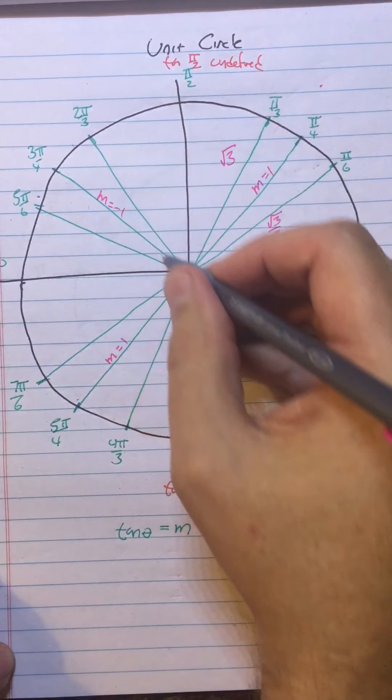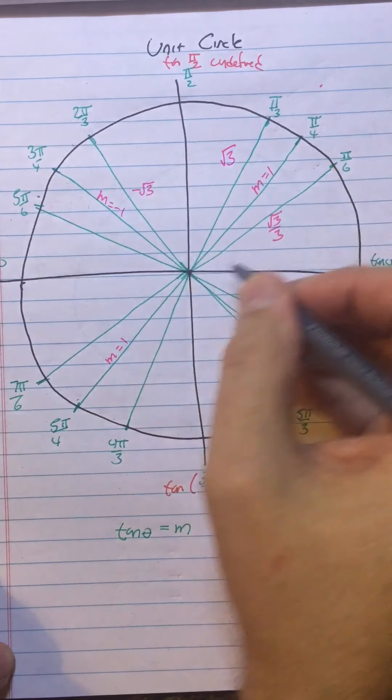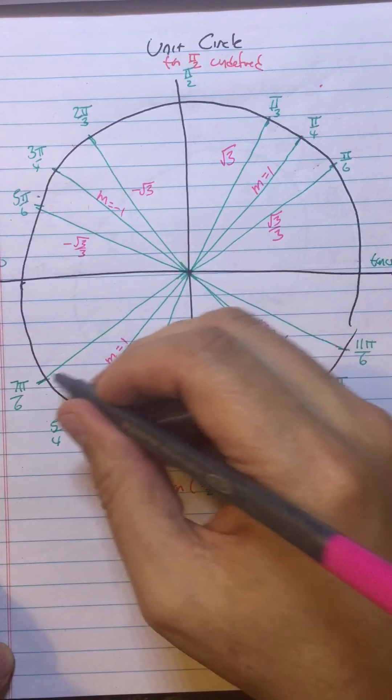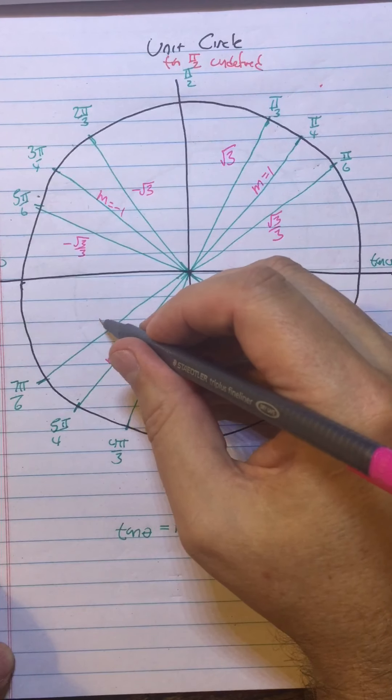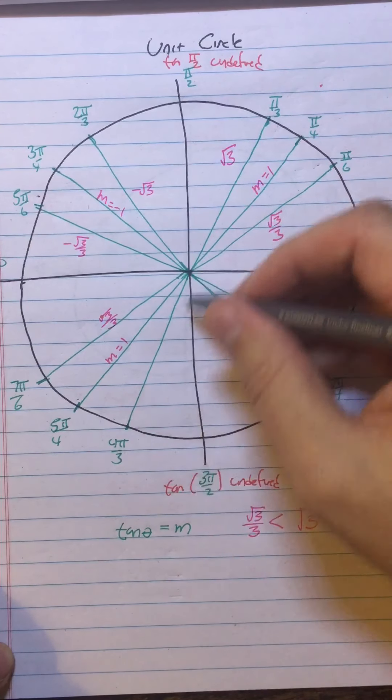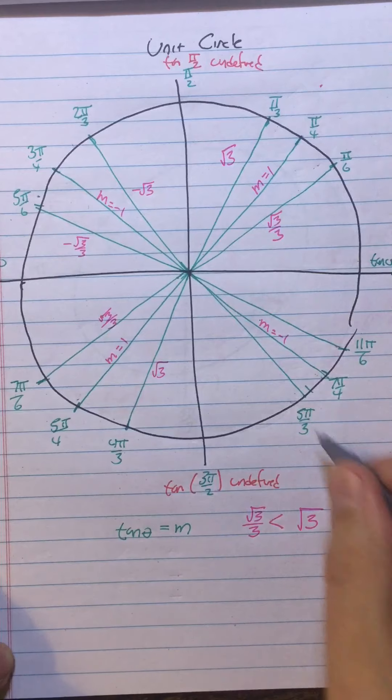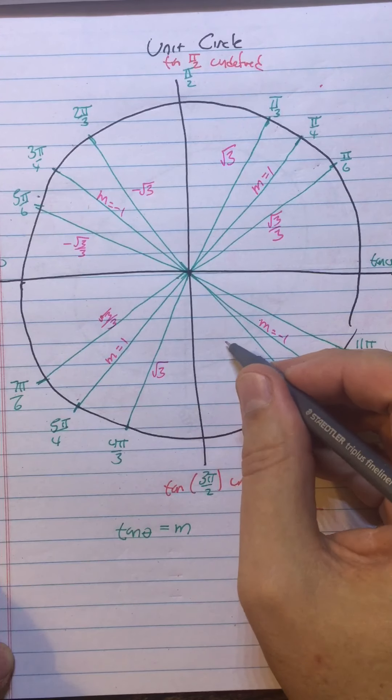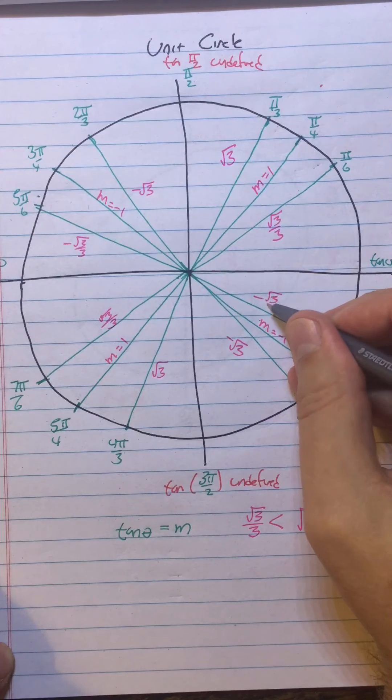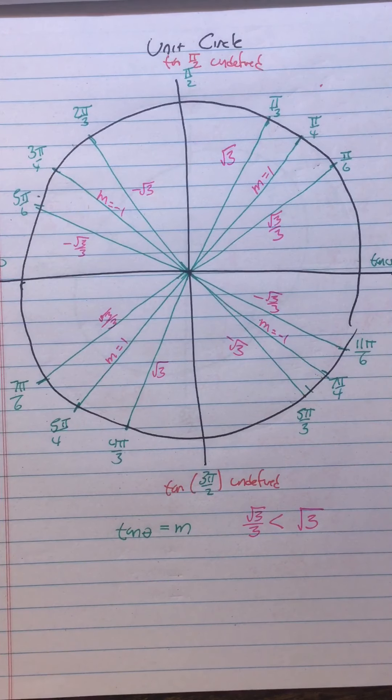And then this is a large slope going down, so it's -√3. This is a slight slope going down, so it's -√3/3. This is a slight slope going up, so it's √3/3. This is a steep slope going up, so it's √3. This is a steep slope going down, so it's -√3. This is a shallow slope going down, so it's -√3/3. So you can get those tangents very easily.